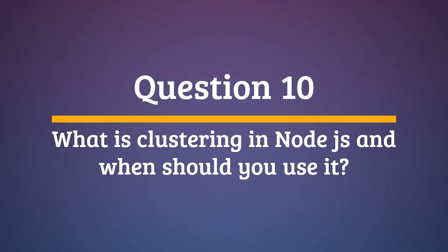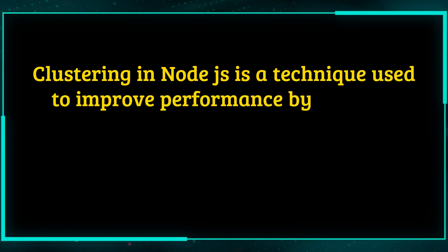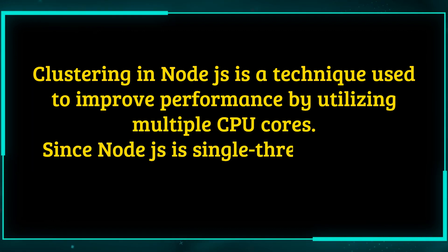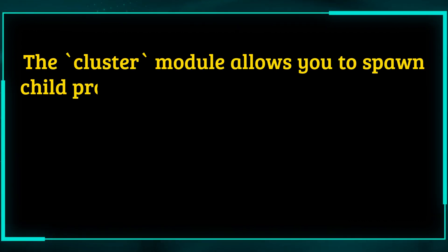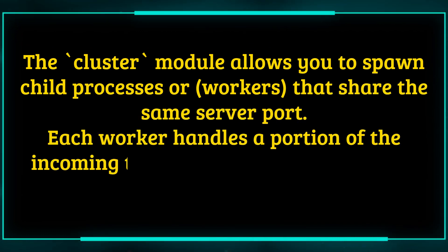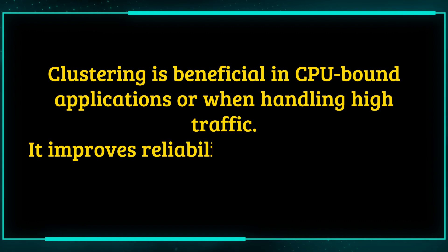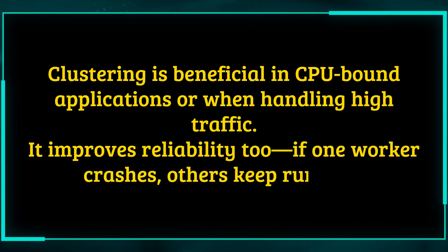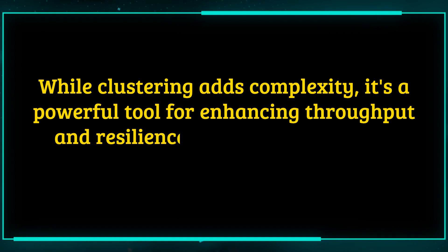Question 10. What is clustering in Node.js and when should you use it? Answer. Clustering in Node.js is a technique used to improve performance by utilizing multiple CPU cores. Since Node.js is single-threaded, it can only use one core by default. The cluster module allows you to spawn child processes, or workers, that share the same server port. Each worker handles a portion of the incoming traffic, making the application scalable and efficient. Clustering is beneficial in CPU-bound applications or when handling high traffic. It improves reliability too — if one worker crashes, others keep running. While clustering adds complexity, it's a powerful tool for enhancing throughput and resilience in large-scale Node.js applications.